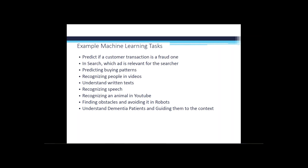Recognizing speech has already been mentioned. Recognizing animals in YouTube videos is another example — letting a large automated engine go through thousands of videos and understand different creatures and human beings without human intervention. Finding obstacles and avoiding them, for example in robotics, is a classic application as well.